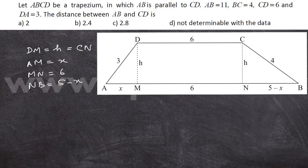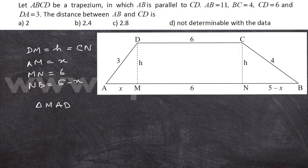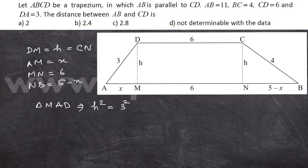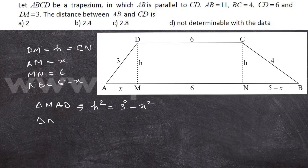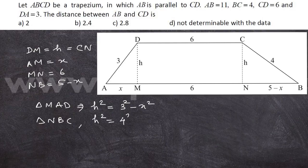Now, I can consider two triangles. In triangle MAD, I have H square is equal to 3 square minus x square. In triangle NBC, we have H square is equal to 4 square minus (5 minus x) the whole square.